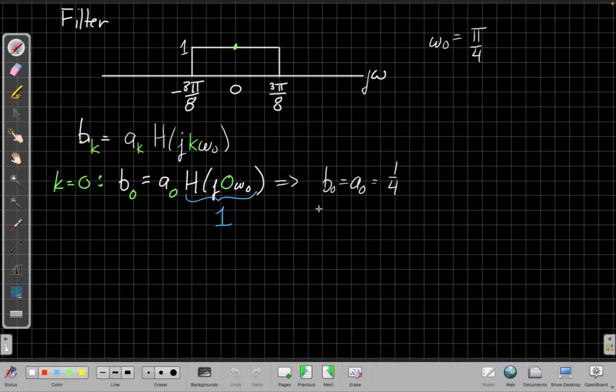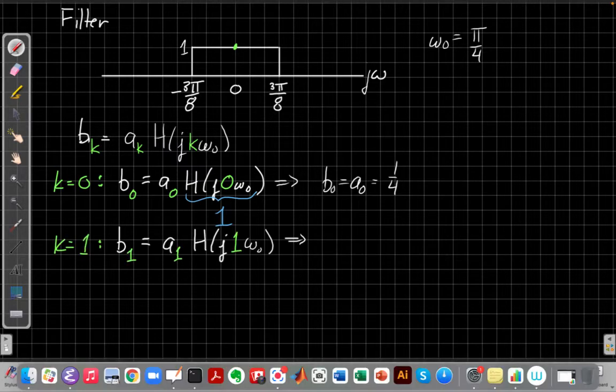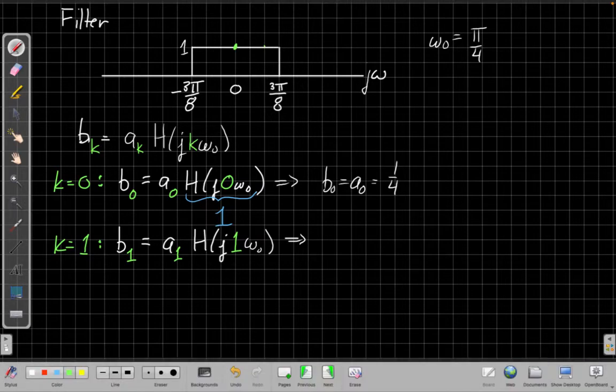I now just repeat this process with k equals 1, 2, and so on. For k equals 1, I set all these k's equal to 1. I get b sub 1 is a sub 1 times the frequency response evaluated at 1 times omega naught, which is pi over 4. So let me mark the graph where I'm looking at. Pi over 4 in this case would be, if this is 3 pi over 8, and there's pi over 8, it would be right here, two divisions over. So again, the height here is 1. This is at omega equals pi over 4, which is 1 times omega naught. And the amplitude is 1, and so this term here will again be 1. So that tells me the first harmonic also goes through with no change.